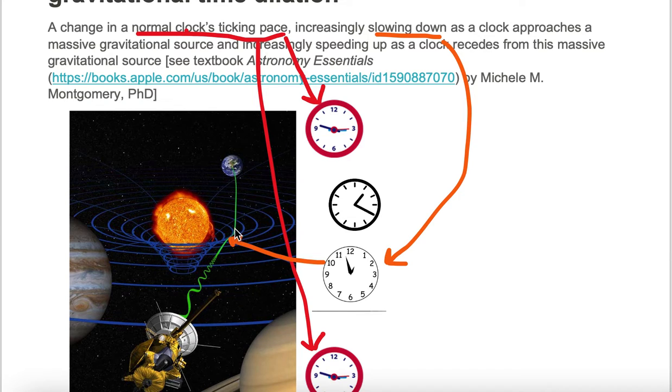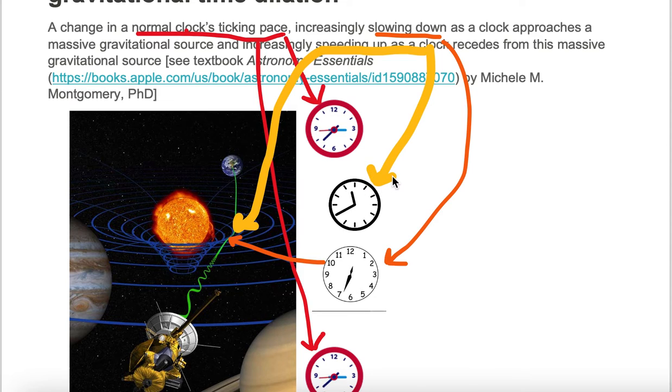As soon as the clock tries to leave the Sun, it has to pull out of the gravitational potential well, and the clock ticking pace is going to speed up, as denoted by this clock.